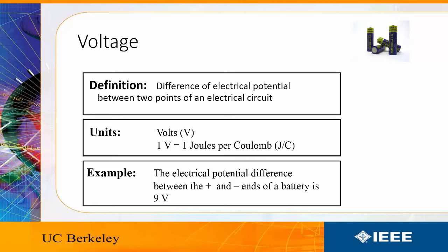The amount of energy it takes to move this charge from point to point is called voltage. The technical definition of voltage is the difference of electrical potential between two points of an electrical circuit. The units are called volts or joules per coulomb.